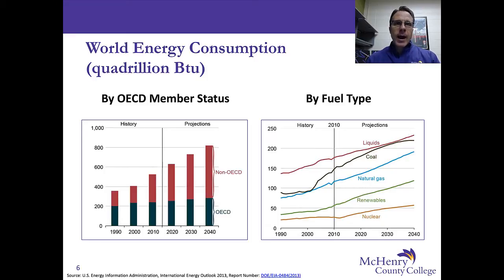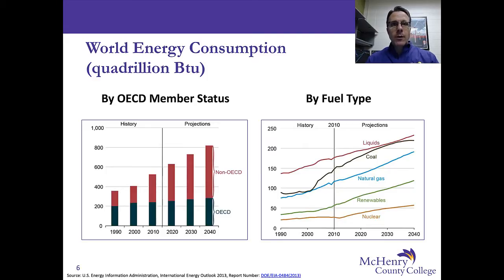Here we're looking at a graph, or two graphs, of world energy consumption in quadrillion BTU. On the left side we see OECD member status — that is looking at countries in terms of whether they're a member of the OECD or not.